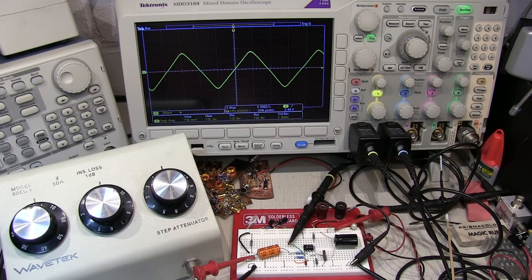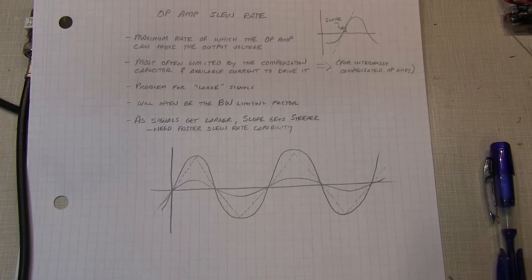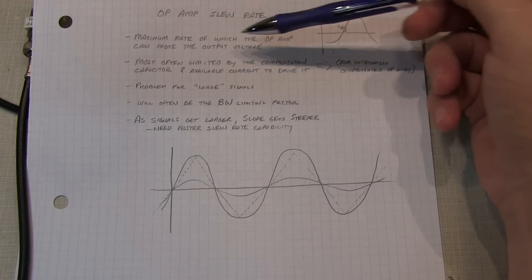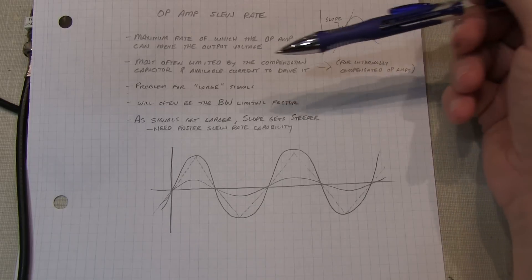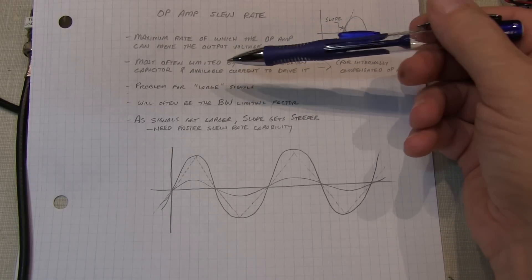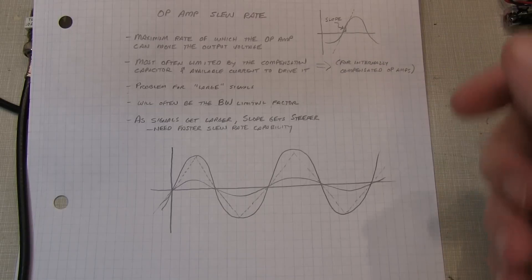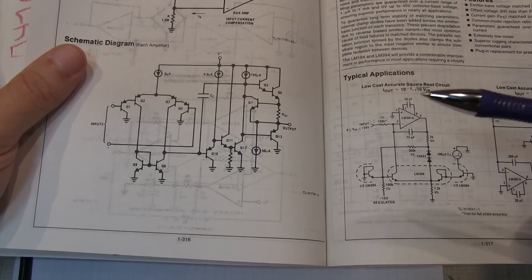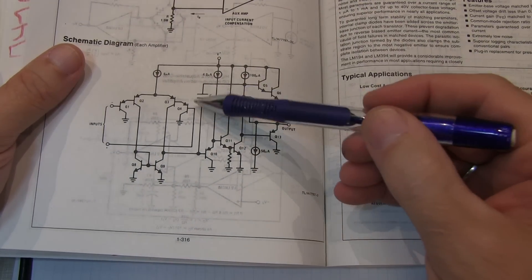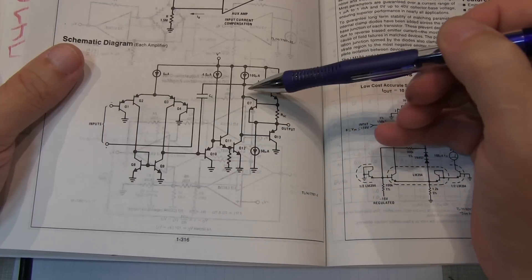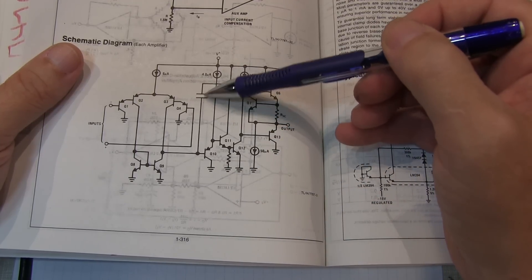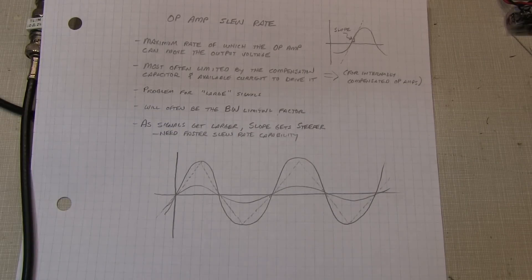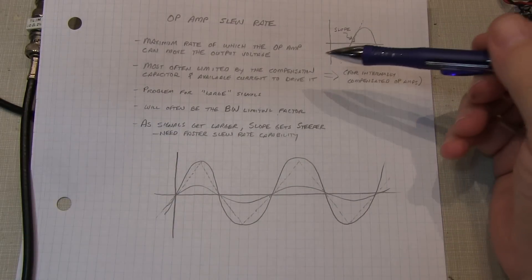The op amp slew rate is basically defined as the maximum rate, how quickly the op amp can move the output voltage. This is often limited by the internal compensation capacitor and the available current to drive it. If we look at the schematic of an LM358, this is out of an old National Semiconductor Data Book, this is the compensation capacitor we're talking about. Oftentimes there's a limited amount of current that's available to charge or discharge that capacitor. And that gives rise essentially to a limited rate at which the output can be swung.